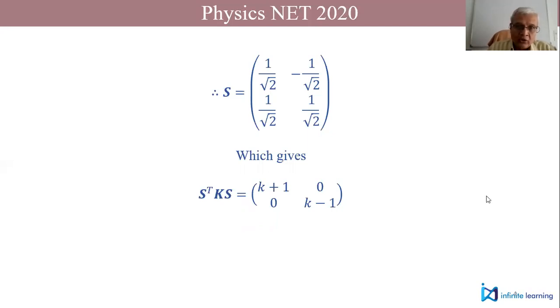If I take this as my new K matrix in coordinates x' and y', then you can see since it's a diagonal one, the oscillations in x' and y' are decoupled.